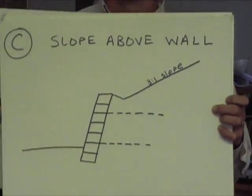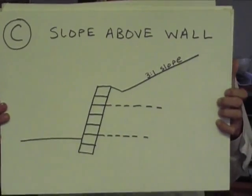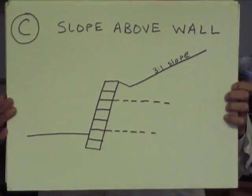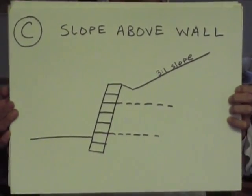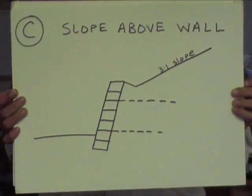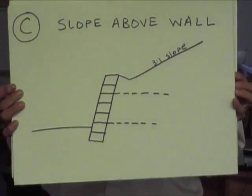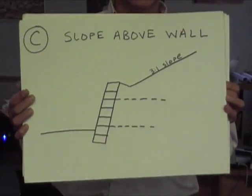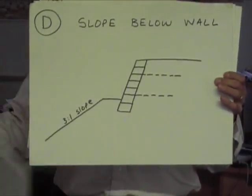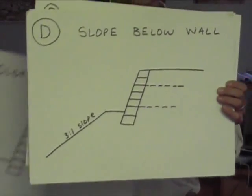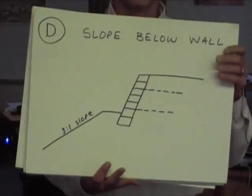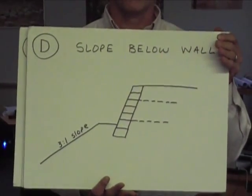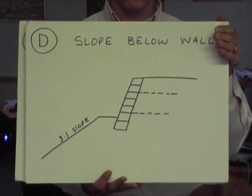Condition C is a wall where there is a slope above the wall. Condition D is the situation when you have a slope below the wall.